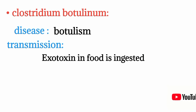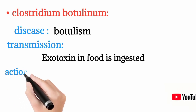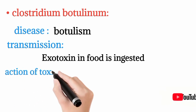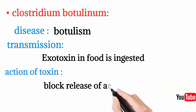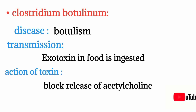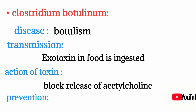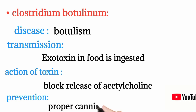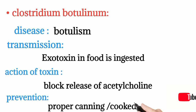Clostridium botulinum's exotoxin blocks the release of acetylcholine, an excitatory neurotransmitter, thereby increasing inhibitory action and causing flaccid paralysis. Prevention involves proper canning and proper cooking of food to neutralize the exotoxin.